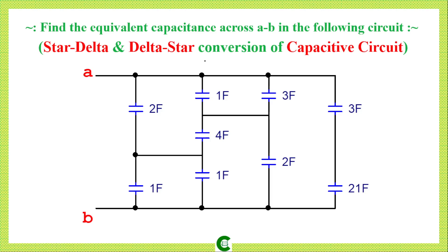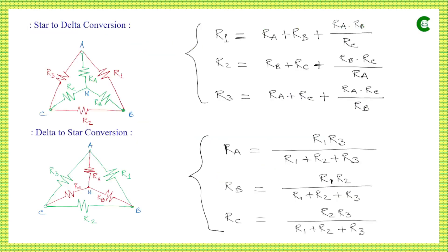In this class we will learn to simplify a capacitive circuit that has star and delta connections. At the same time we will also learn how to convert from a star connection of capacitors to a delta connection of capacitors and vice versa. First we will learn the formulae.